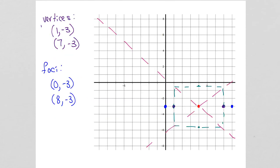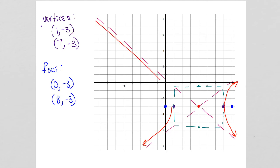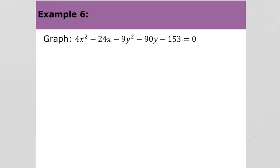Now we can graph our hyperbola using our asymptotes as a guide. Please fill up your graph when you're graphing these. Now we move forward and work an example that needs to be put in standard form first.